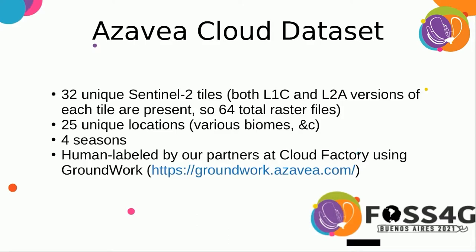The dataset we have created consists of 32 unique Sentinel-2 tiles. Within our dataset, we have both L1C — that is, top of atmosphere — and L2A, which is a surface reflectance or atmospherically corrected version of each tile. So we have 32 unique tiles, but there are 64 total raster files within our dataset.